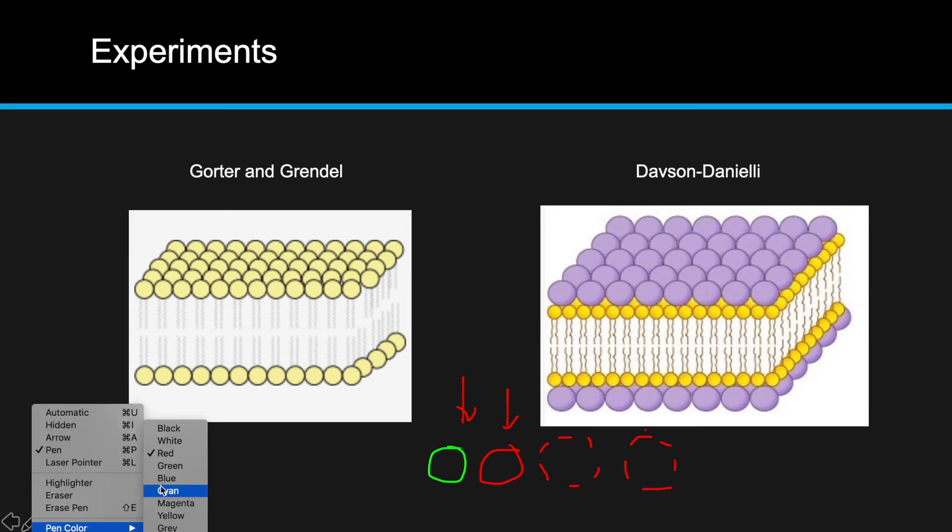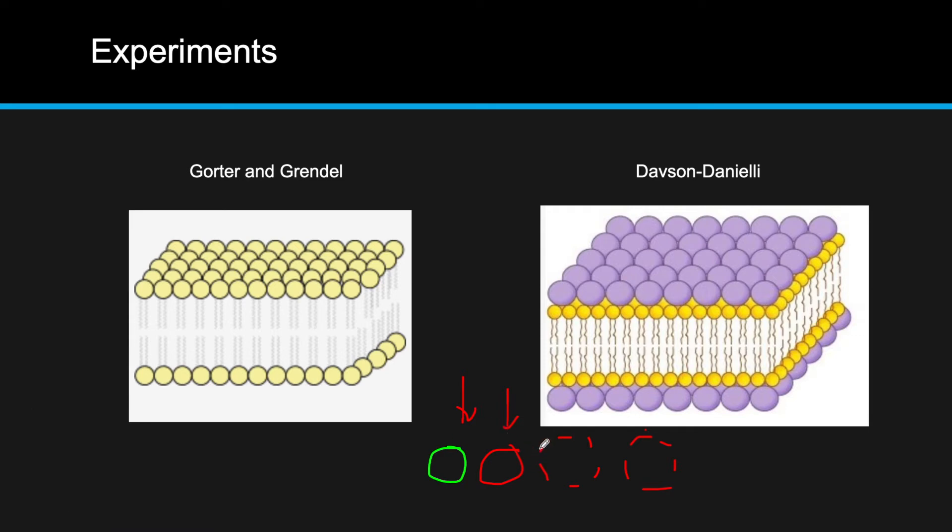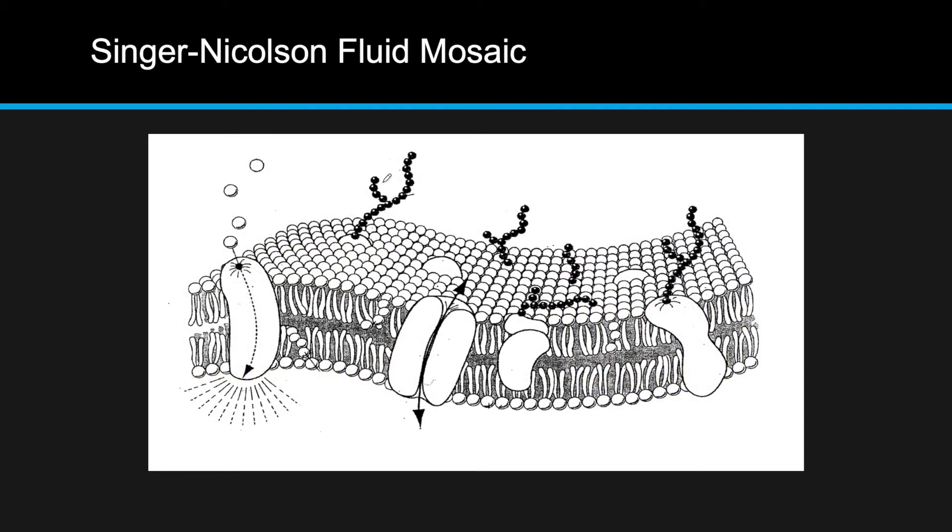That means this rigid structure defined by the Davson and Danielli model, where there was a sandwich of proteins, doesn't make sense anymore. How can this whole section be replaced with green when it was only the outside that was touched? That gave rise to the Singer-Nicolson model or the fluid mosaic model.